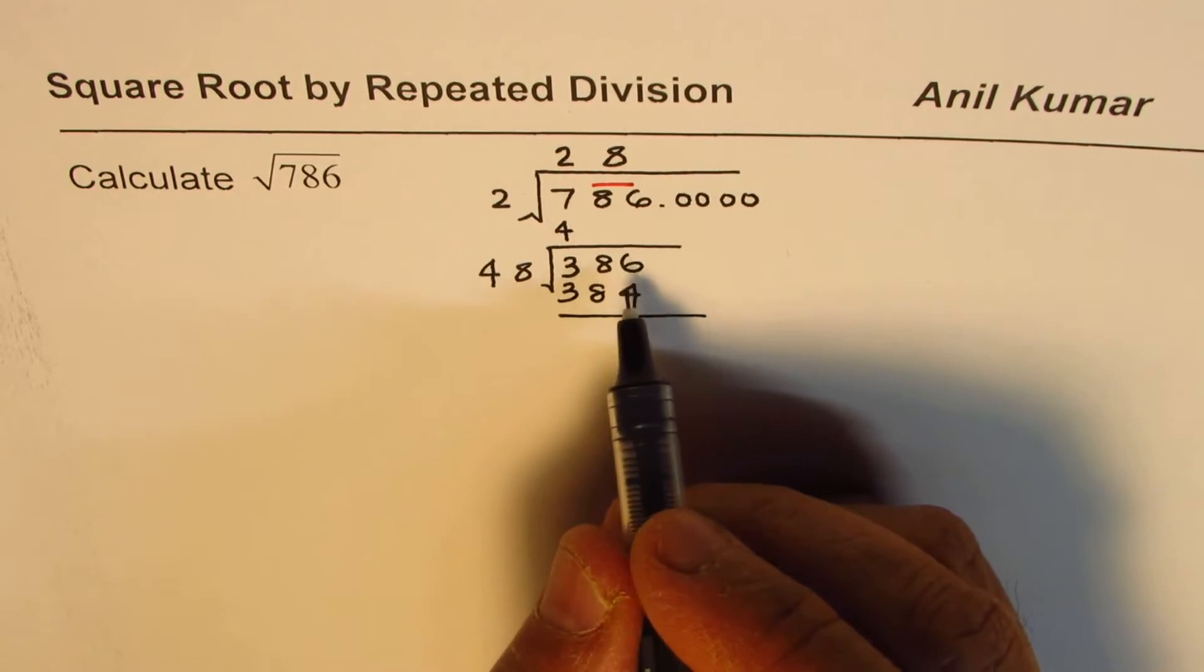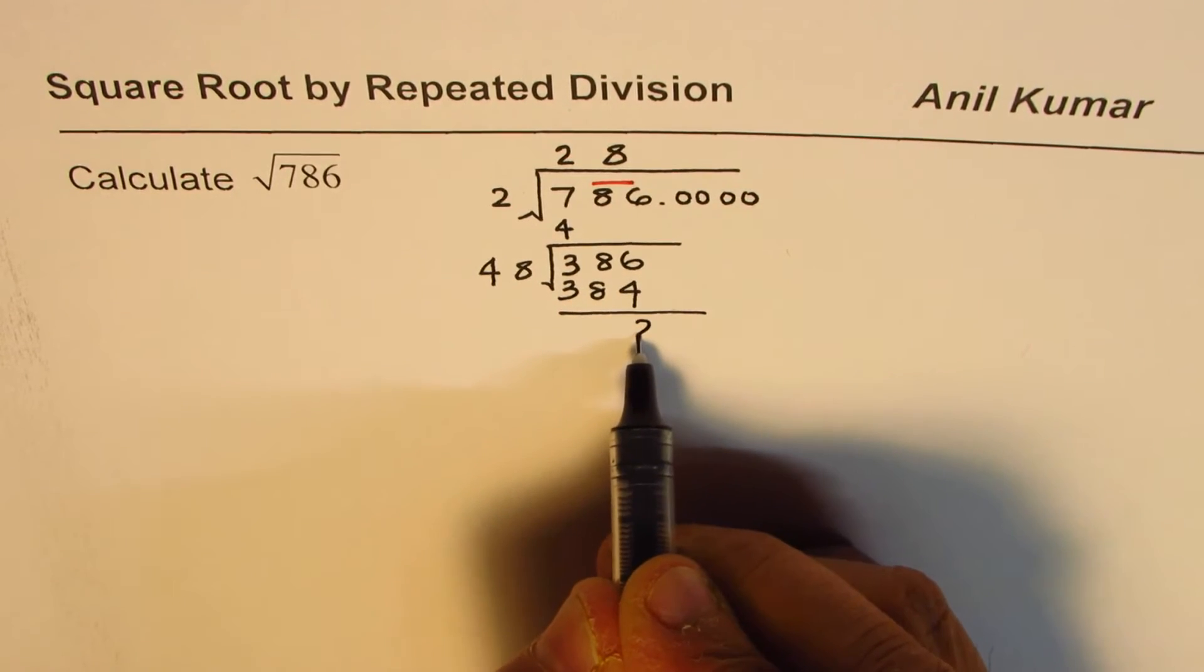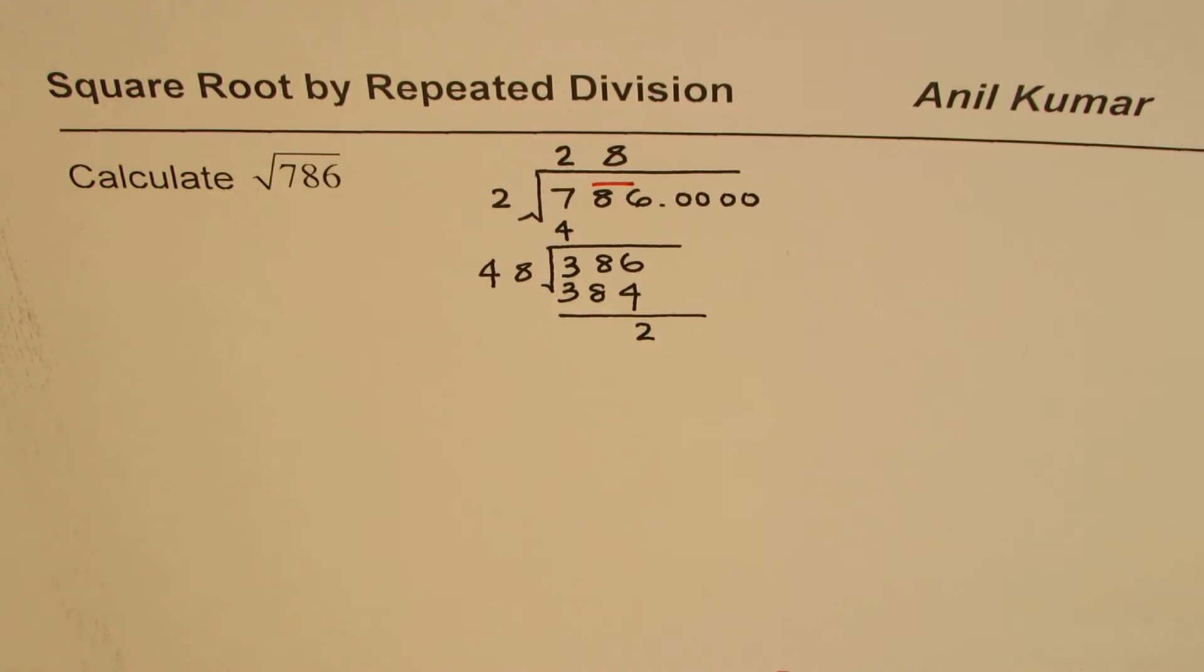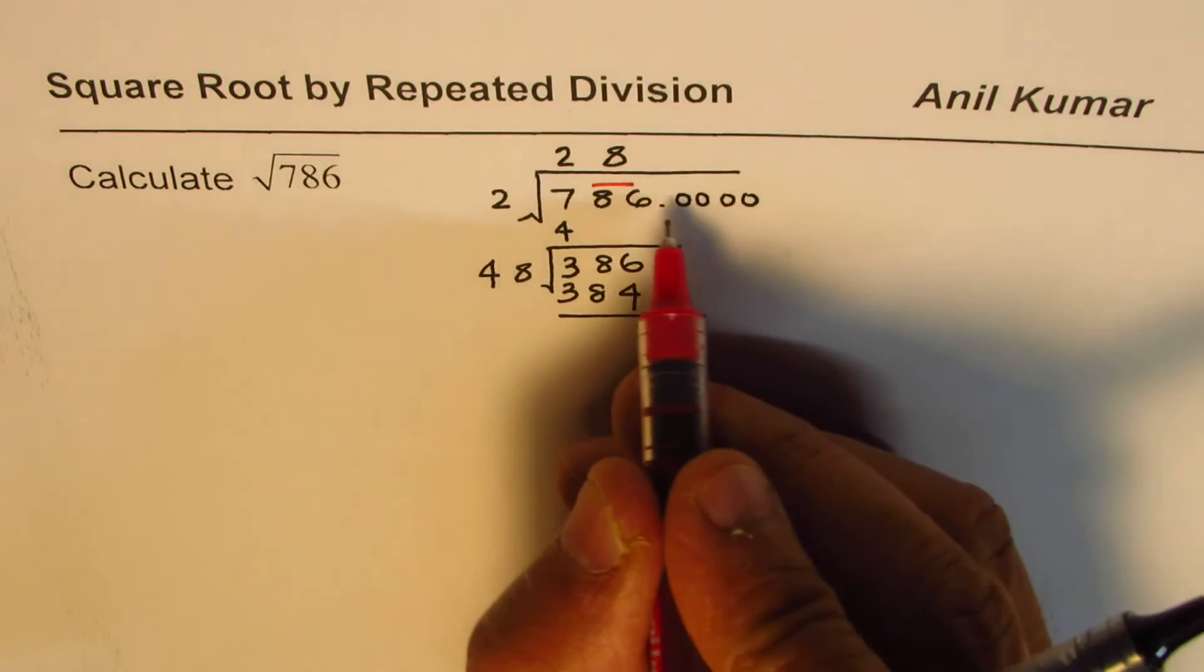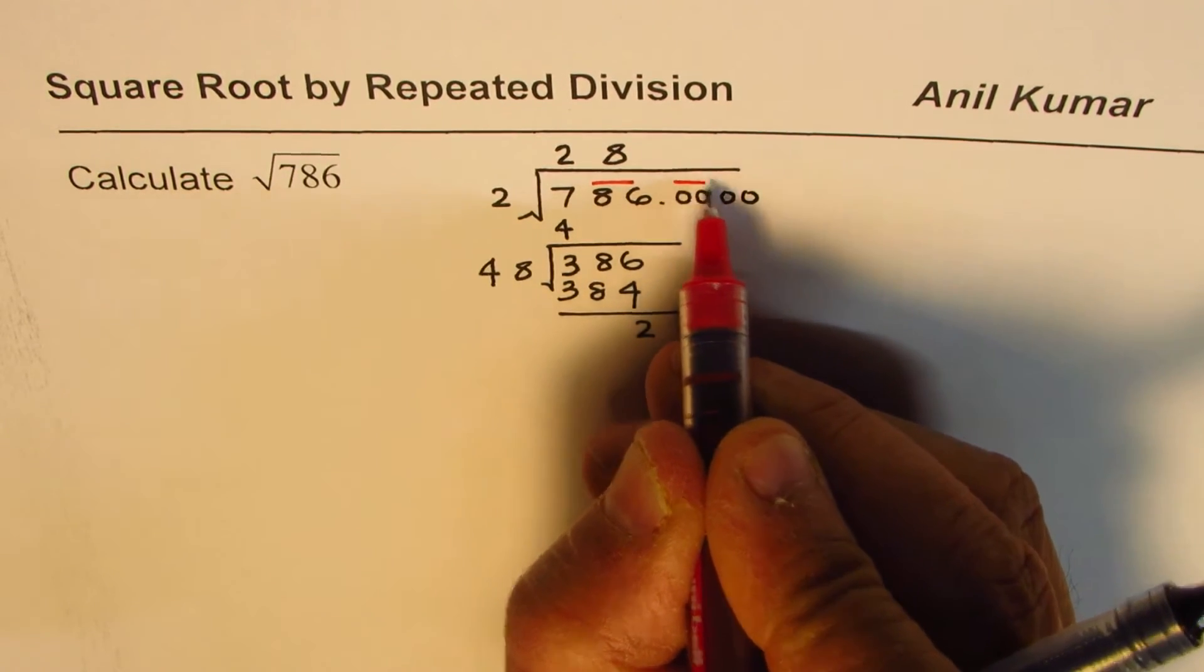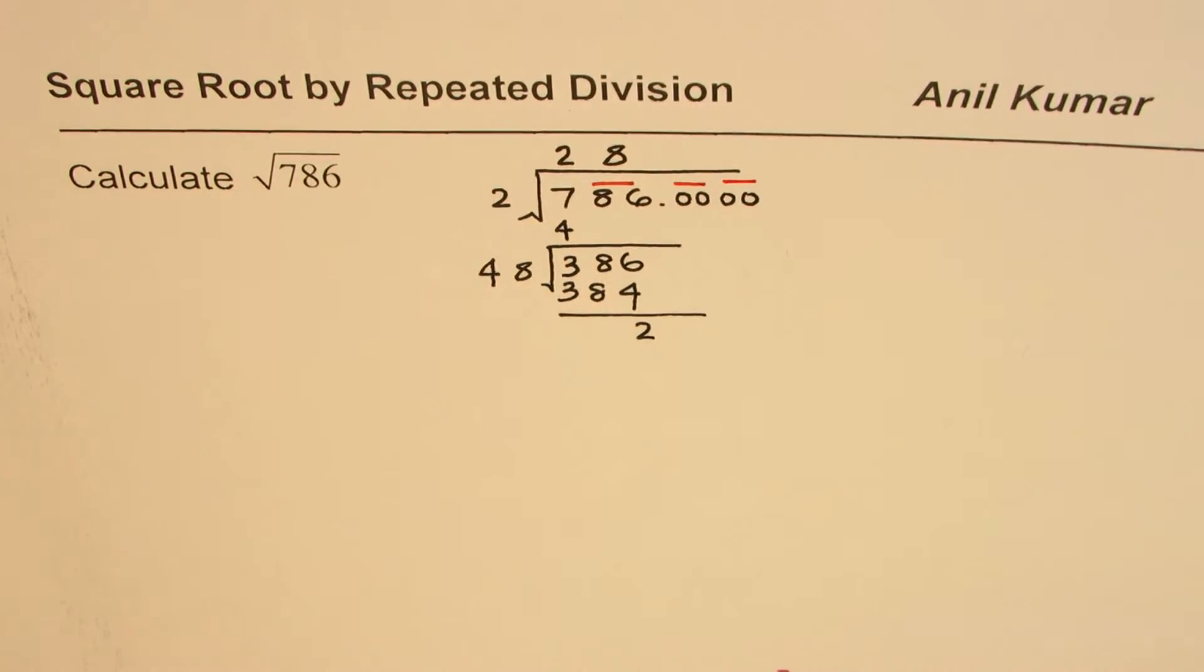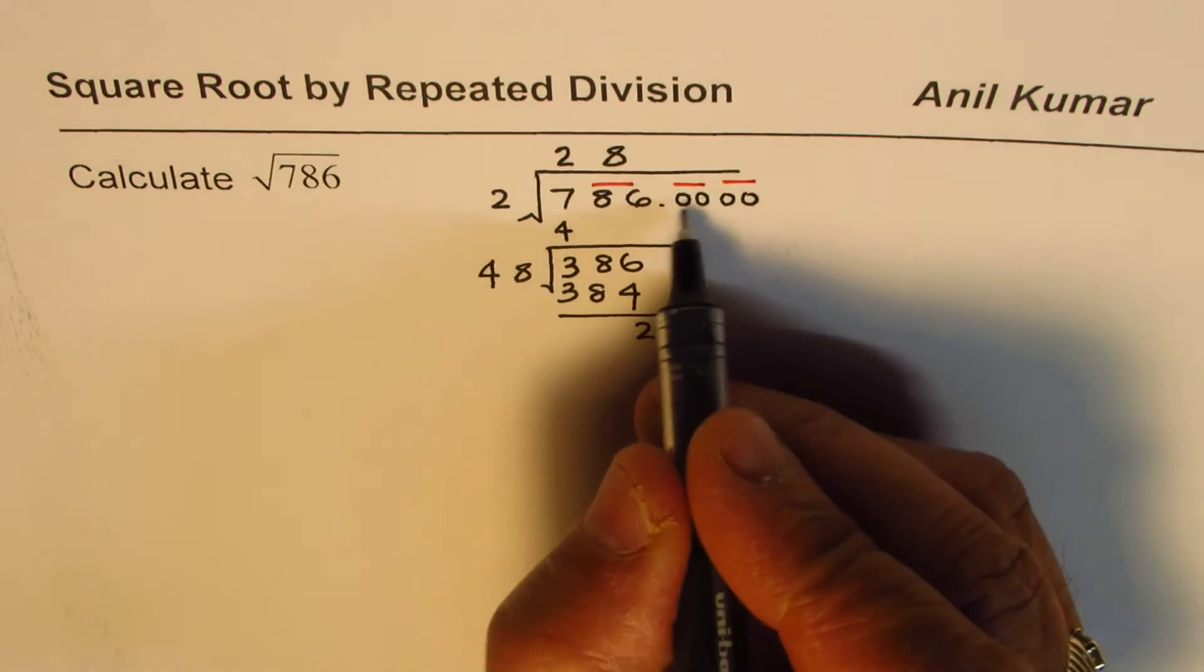Now we'll follow the division process. The remainder here will be 2. After the decimal place we have to take the numbers in sets of 2s. After decimal we make sets from the decimal moving right. So always the set of 2s is made when you move from decimal whether towards left or right. Bring down both the zeros.